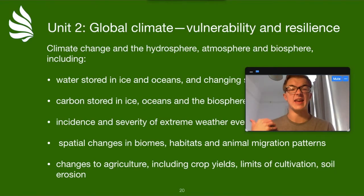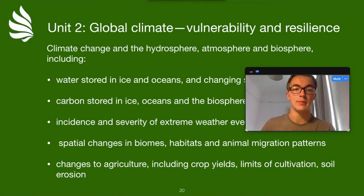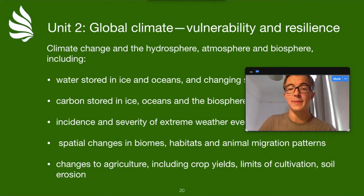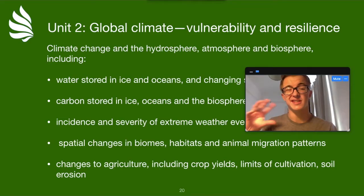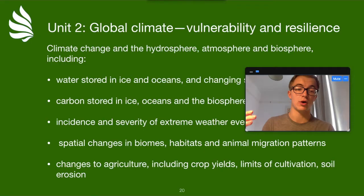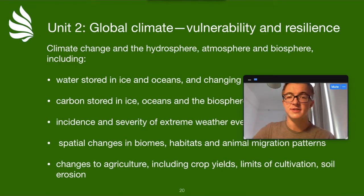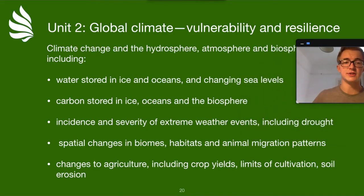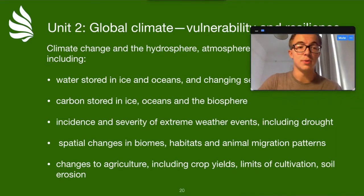Today we're going to be looking at the impacts in terms of the three different spheres on Earth — how does an increase in global climate affect the hydrosphere, the atmosphere, and the biosphere? In a later video we'll look at the implications for humans, but in this one we're focusing first on water, a little bit on carbon, more generally on extreme weather events, and finally on agriculture and the impact on plant life. I've lifted the bullet points from the syllabus and we'll be covering all of these points over the next 10 to 15 minutes.